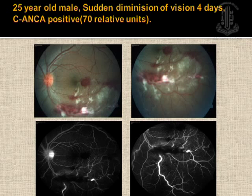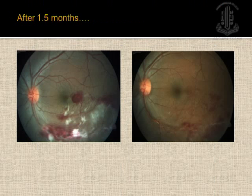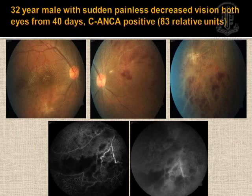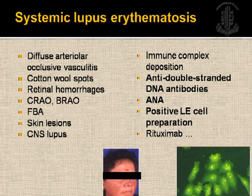Pan-uveitis with vasculitis includes tuberculosis with varied manifestations and sarcoidosis, which will be discussed in the next talk. Other pan-uveitic entities to keep in mind include lens-induced uveitis and intraocular lymphoma.